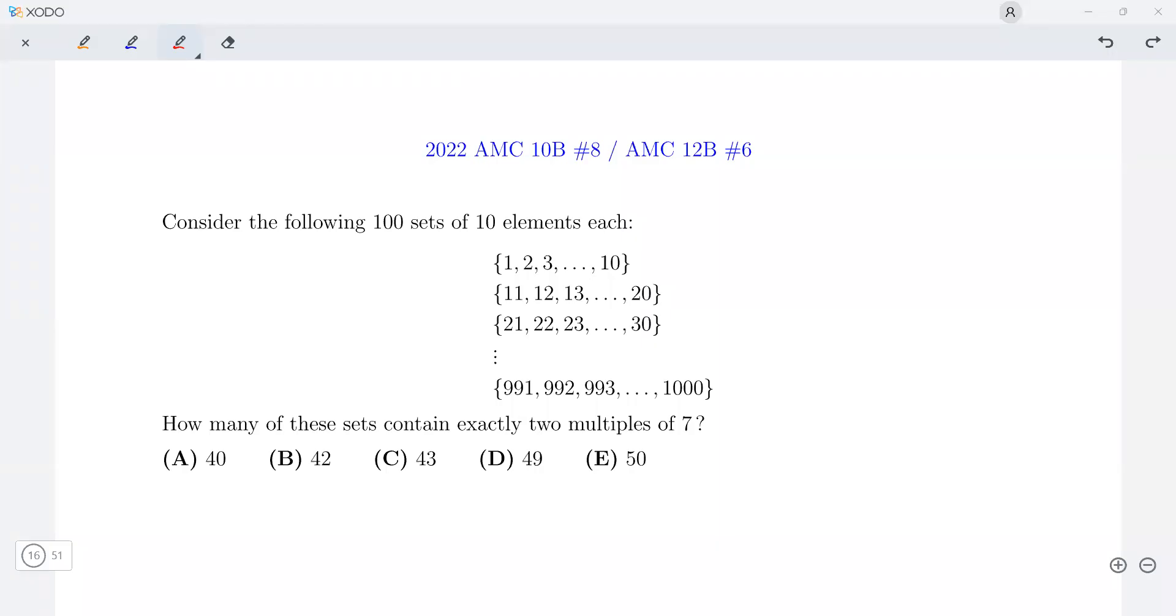Consider the following 100 sets of 10 elements each: 1 up to 10, 11 up to 20, 21 up to 30, and so on. The last one is 991 up to 1000.